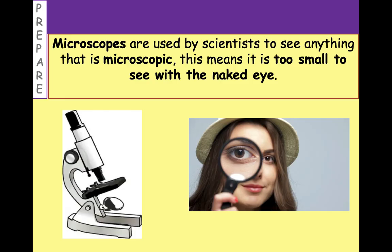Microscopes are used by scientists to see anything that is microscopic. The word microscopic quite literally means too small to see with the naked eye — that just means you're not using anything to help. Bacteria are microscopic. Atoms and compounds are microscopic. But we tend to use microscopes for things that are living or within a reasonable size range. We can't really see atoms and compounds with the microscopes we use in school. We tend to use microscopes to see cells and things inside of cells — subcellular structures.